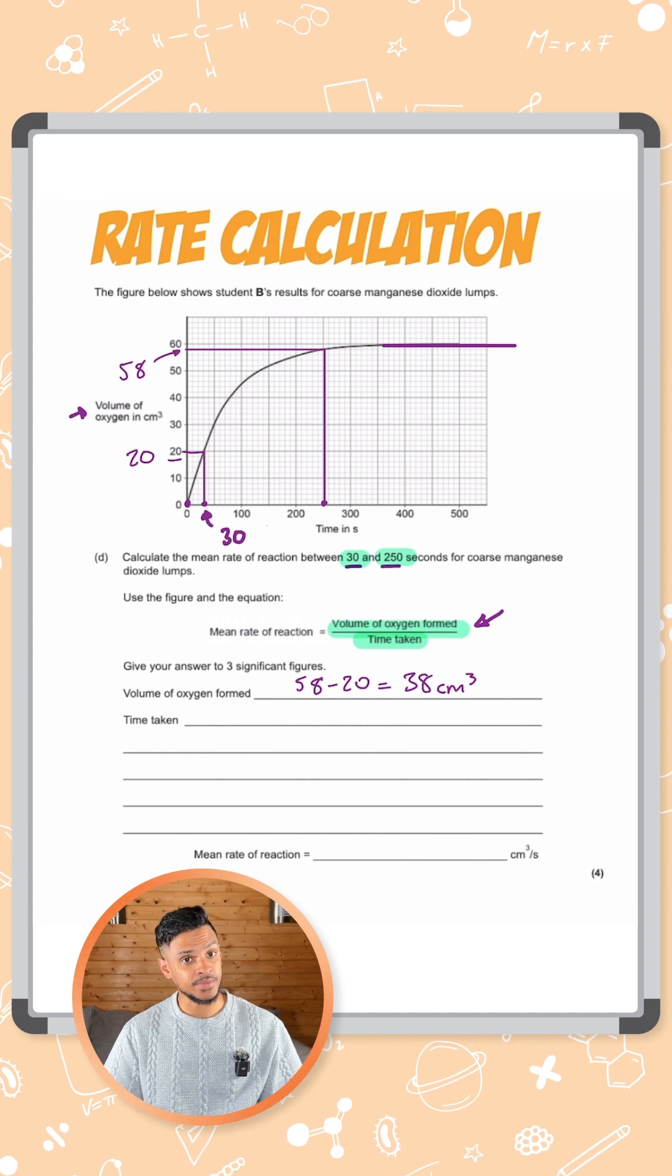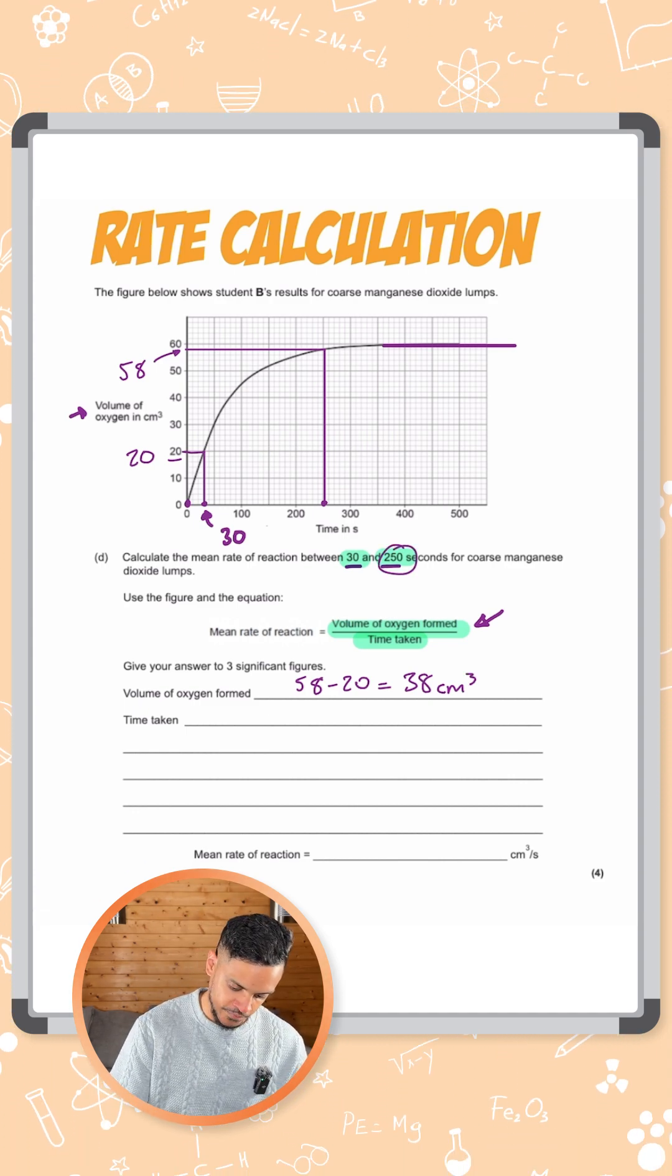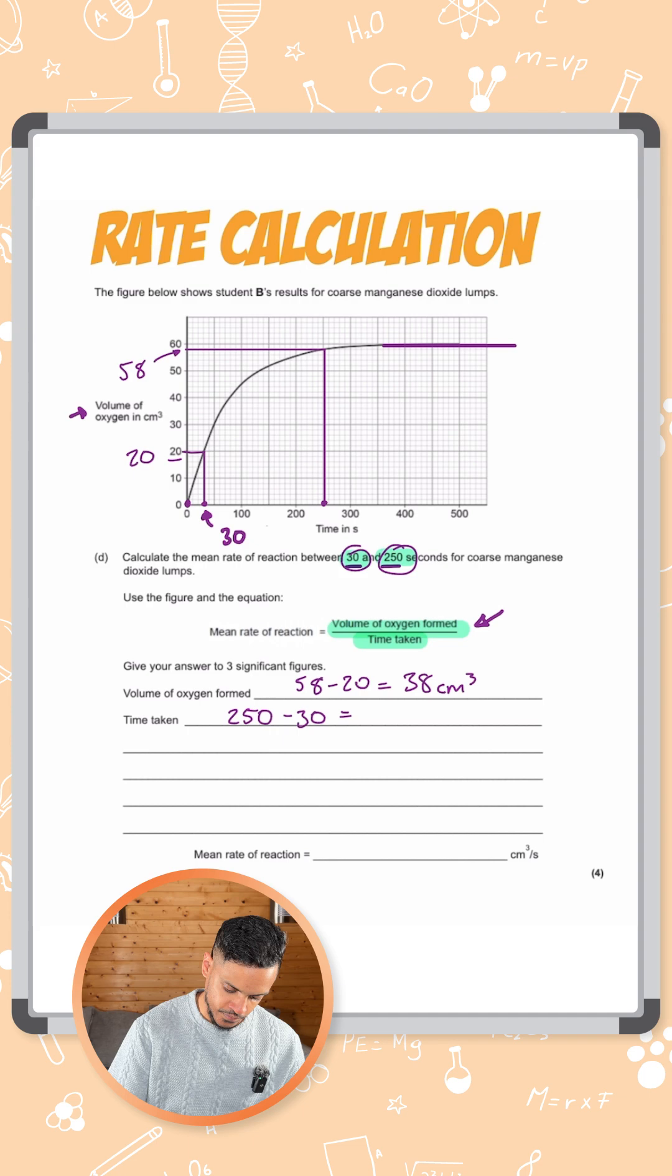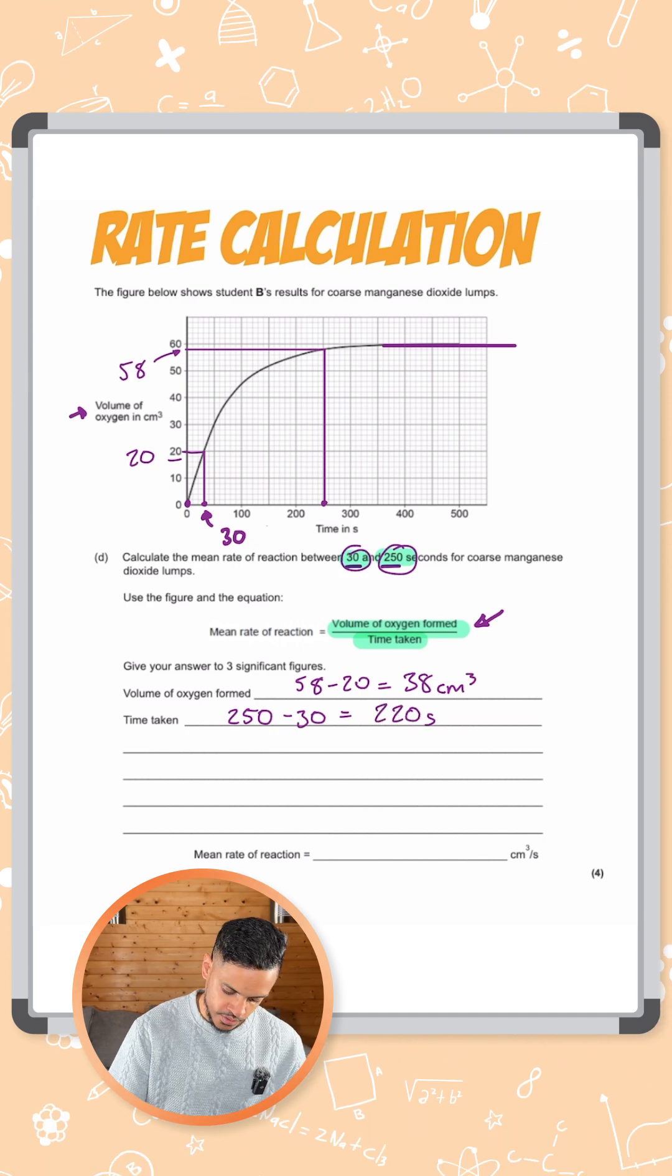Now we need the time taken. The time taken is simply the 250 and the 30. So 250 minus 30 gives you 220 seconds.